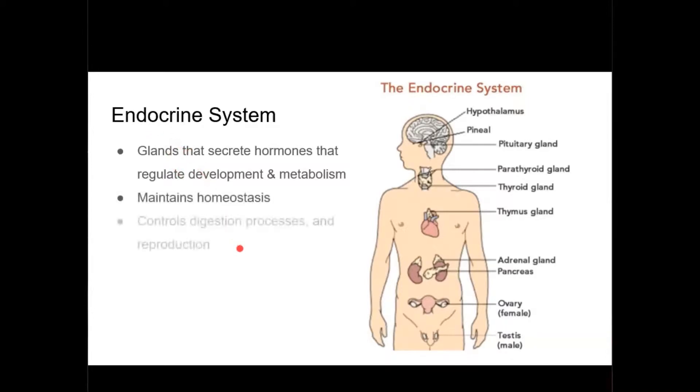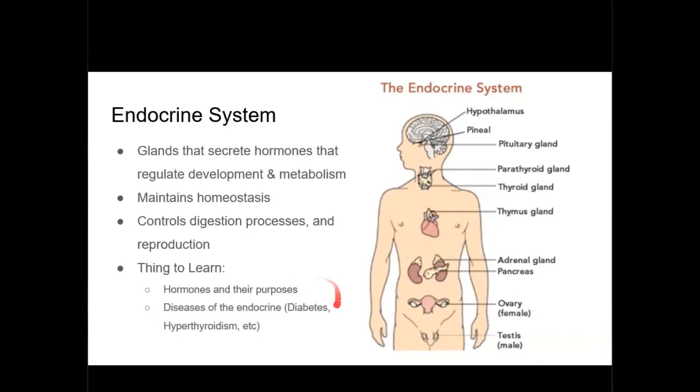Things to study: you want to know the different hormones and their purposes. You also want to know the different diseases of the endocrine system. For the endocrine system, usually the diseases that result are when too much of a hormone is produced or too little of a hormone is produced. For example, diabetes is when insulin is either too much or too little.